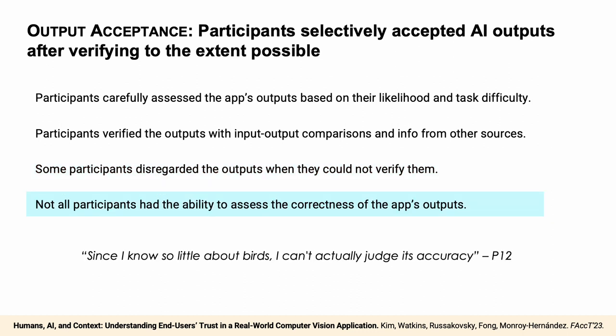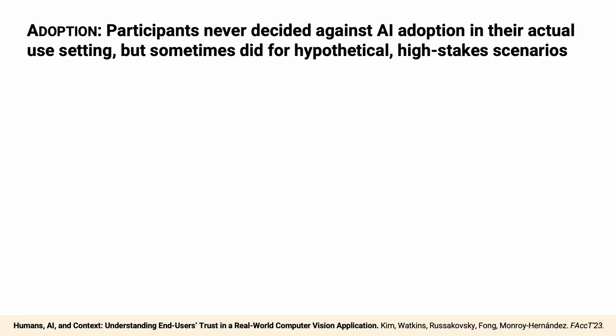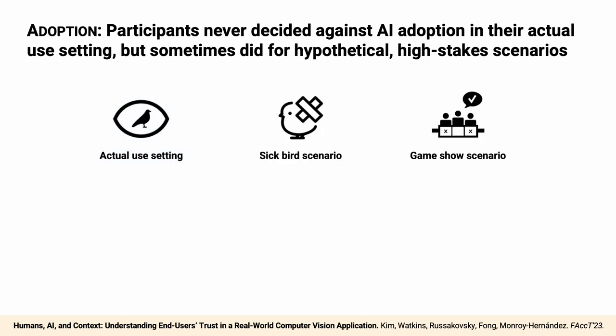However, not all participants had the ability to assess the correctness of the app's outputs, as captured in this quote from participant 12: 'Since I know so little about birds, I can't actually judge its accuracy.' The final aspect of trust in AI we analyze is how participants made AI adoption decisions, another type of instance-specific trust-related behavior. In their actual use setting, participants never decided against using the app — they only described situations where they decided to use it. However, when we presented hypothetical high-stakes scenarios, we observed a different decision-making process around app adoption.